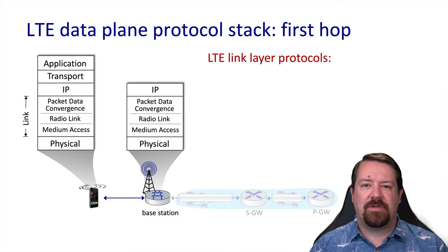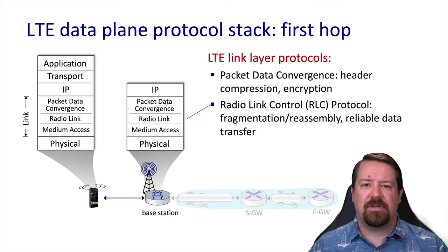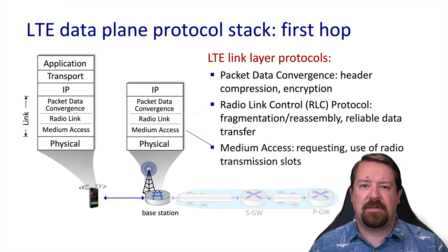Layer 2 in this environment can be subdivided into several components: the packet data convergence layer, the radio link layer, and the medium access control layer. The packet data convergence layer handles compression and encryption of user data, while the radio link controller handles reliably transferring frames between the user equipment and the base station. The medium access control layer, as we have seen before, negotiates the use of radio transmission slots.